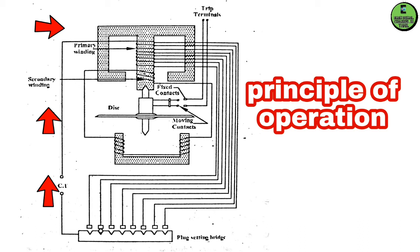When a fault occurs, the CT current flows through the primary windings and the lower electromagnet is energized. An induced current creates a rotating magnetic field, and the interaction changes the torque, which rotates the aluminum disc. The spindle and moving contact rotate, and the moving contact bridges the fixed contact, closing the trip circuit.